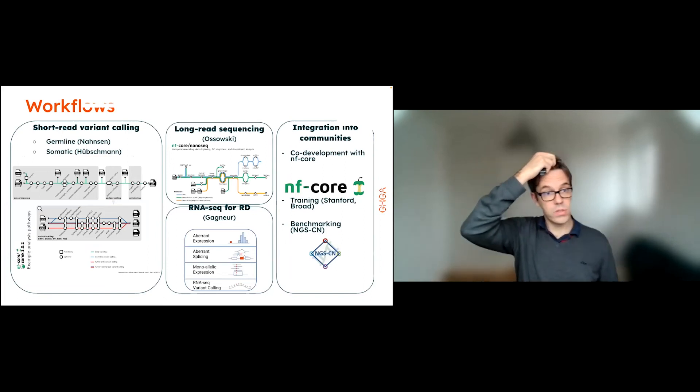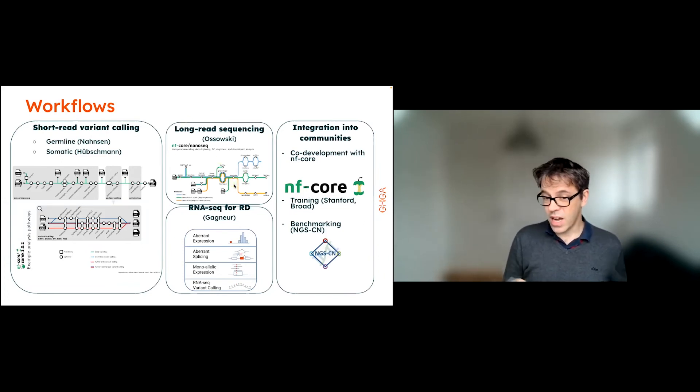We are very interested in workflows. Genome data only makes sense if you know how to deal with it. We're stepping into standards of the community for variant calling, germline, somatic, long read sequencing. Sequencing-based RNA variation is important for rare disease questions. Single cell assets are coming into play. We're engaging with partners like nf-core, which is one of the community standards for workflows that we disseminate broadly outside GHGA.